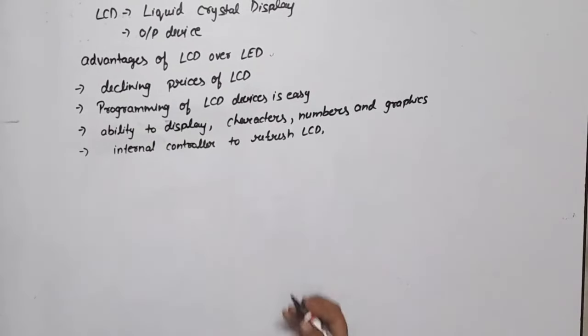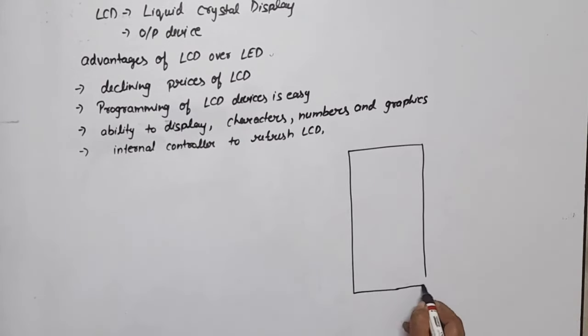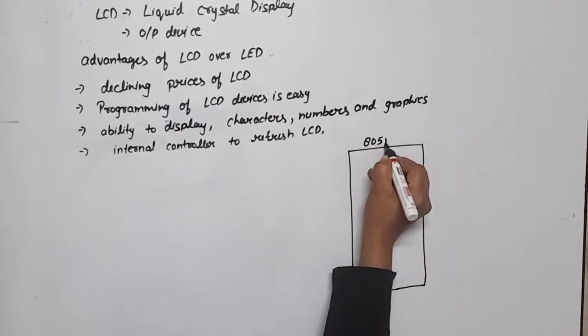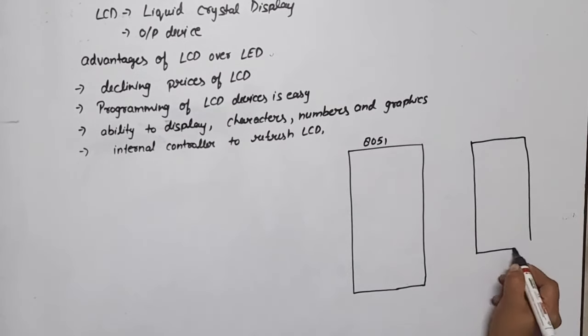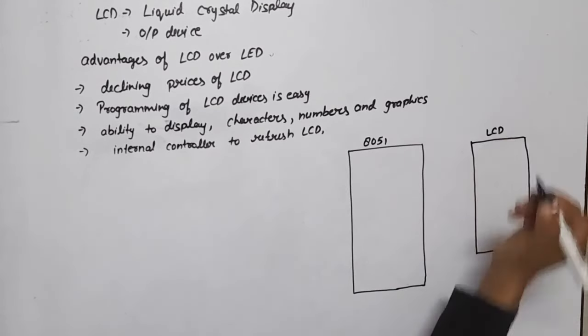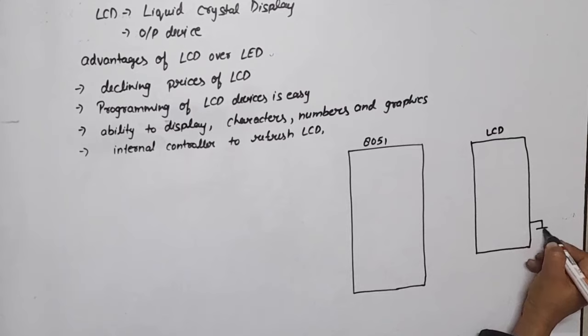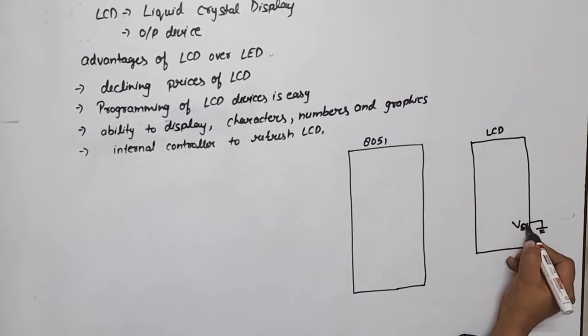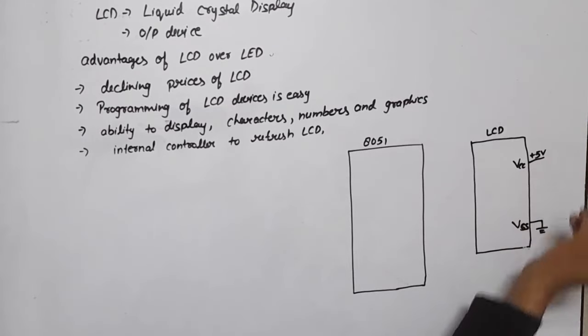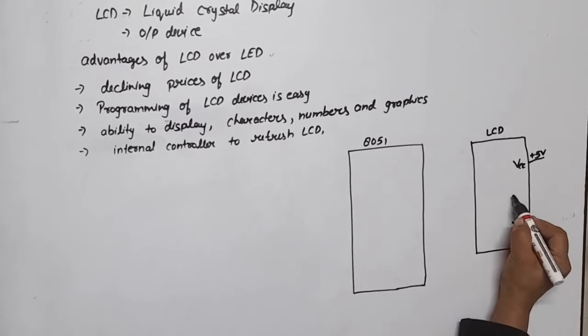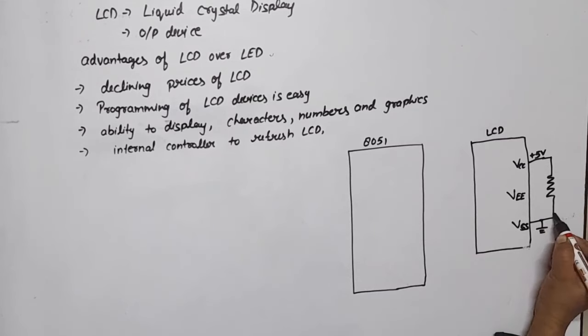Now we will interface to 8051. This is our 8051, and this is our LCD. In this, first of all, if we want to turn on the LCD, we need power supply. For power supply, we will ground it at VSS and provide 5 volt power supply at VCC. There is one more power supply, that is VEE, which is used to control the contrast of LCD.